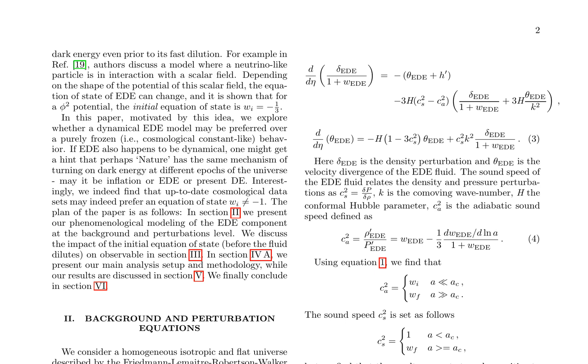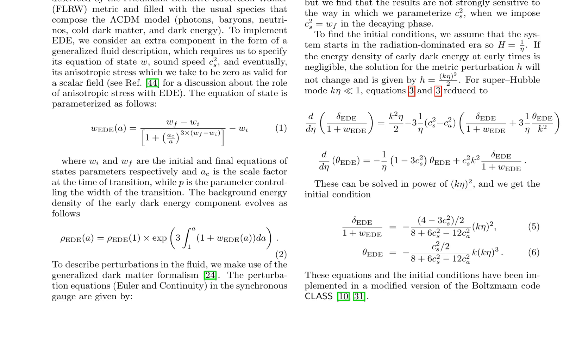AC is the scale factor at the time of transition, and P controls the width of the transition. The background energy density of the EED component evolves as rho EED(a) equals rho EED(1) times exp of the integral of (1 plus W_EED(a)) da over a. To describe perturbations in the fluid, the authors employ the generalized dark matter formalism.